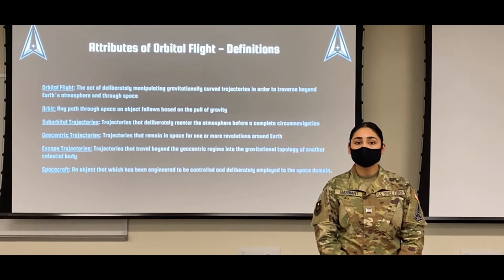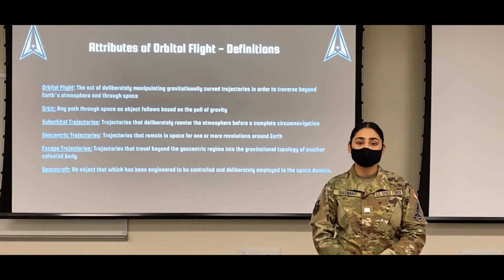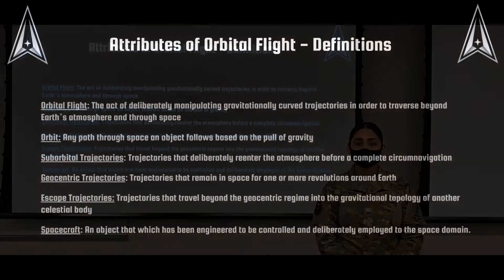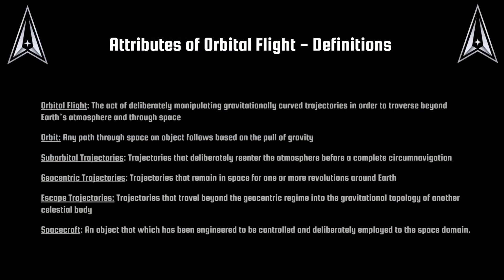We'll start off with a few attributes of orbital flight, but before we get too deep into this presentation, we'll cover a few definitions. Orbital flight is defined as the act of deliberately manipulating gravitationally curved trajectories in order to traverse beyond Earth's atmosphere and through space. An orbit is defined as any path through space an object follows based on the pull of gravity.